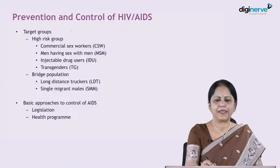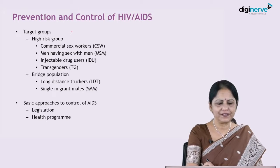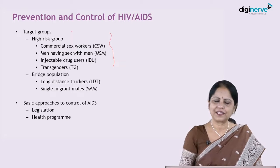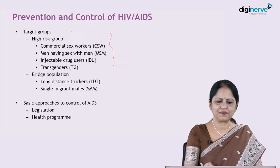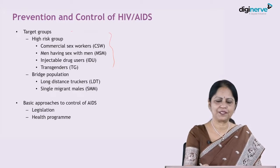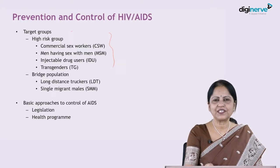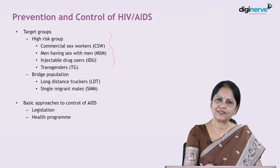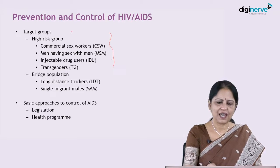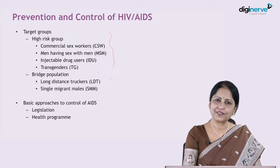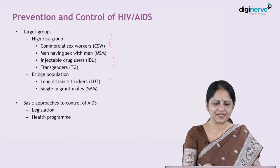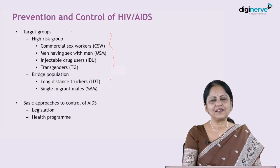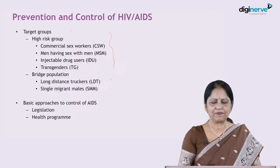First of all, let us know the target groups for this program. There is the high risk group, that is the commercial sex workers (CSW), men having sex with men (MSM), injectable drug users (IDU), transgenders (TG), and bridge population, that is, long distance truckers (LDT) and single migrant males (SMM).